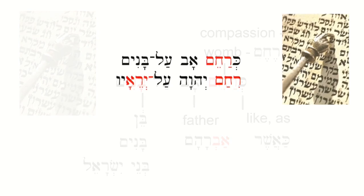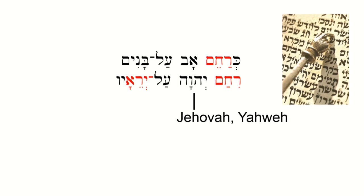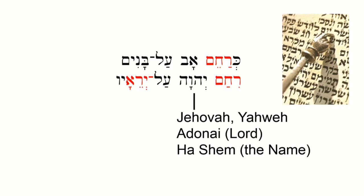Now I'm going to read the first line in Hebrew to see if you get the meaning. So: as the father has this compassion on the sons. Now we get the second line, where I've put in red the same word for compassion. Adonai — in English they say Jehovah or Yahweh, but Jews will say Adonai, which means Lord, or Hashem, which means the name.